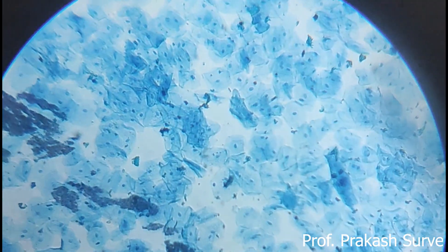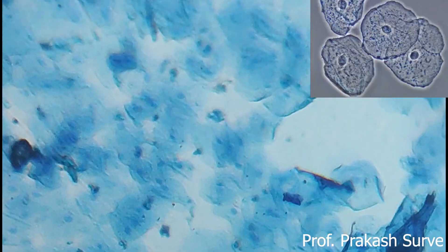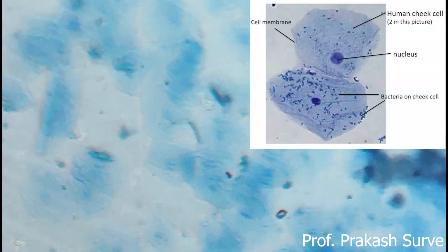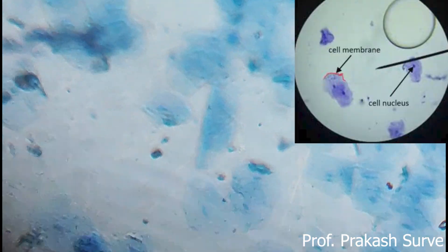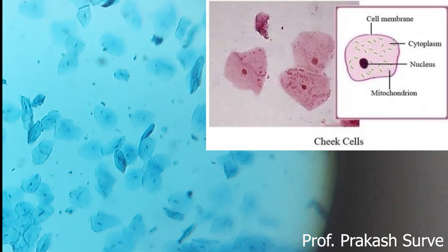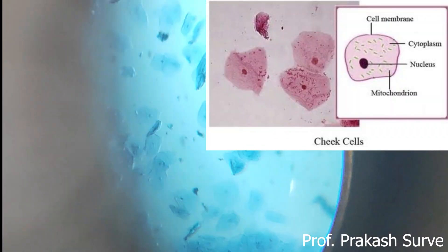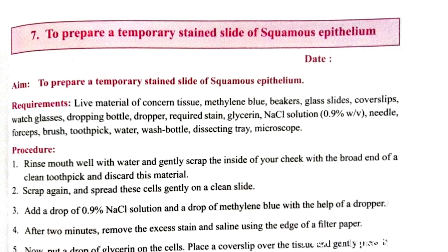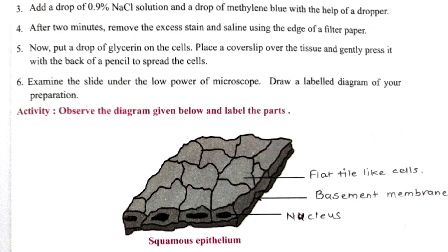We have used methylene blue, which is used to stain animal cells. All the epithelial cells from the buccal cavity show a dark nucleus at the center, surrounded by cytoplasm. The cell membrane is also visible. This concludes all the observations of this experiment.